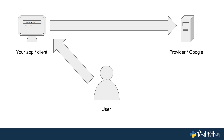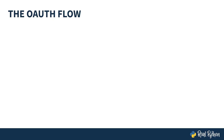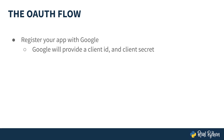These steps of this process are called a handshake, flow, or dance. The first step is to register the client, which is your app, with the provider, which is Google. Your app will receive from Google two values: a client ID and a client secret. These are used to validate your app with Google.